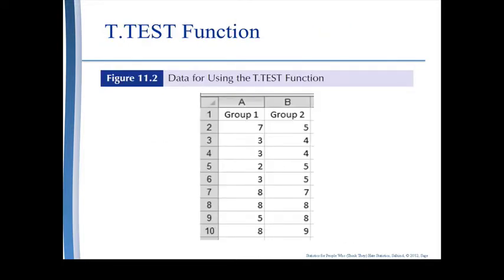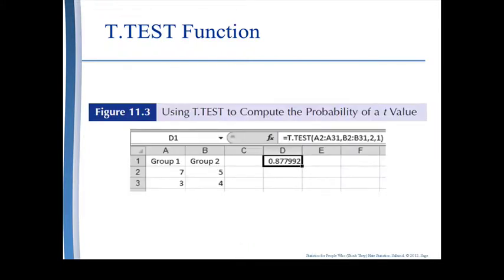We see two groups represented by columns in Excel, and using the t-test function is going to be easy. Type in the equal sign followed by T-TEST, followed by the range of your first group, then the range of your second group, then a number indicating the number of tails — either one or two — and finally a number: one, two, or three depending on the type of test. For independent samples, that number is going to be either a two or a three.